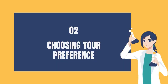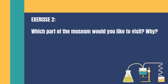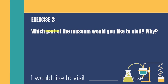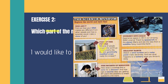Now that we are done reading, it is time to choose your preference. We already learned the word 'preference' — it comes from the word 'prefer,' meaning choosing your favourite. For Exercise 2, which part of the museum would you like to visit? The answer should be: 'I would like to visit... because...' — you need to tell me the reason why. We have five options: Who Am I, Journey into Space, Food of the Future, Healthy Earth, and The Secrets of Medicine. Let's say you're interested in the Secrets of Medicine — 'I would like to visit the Secrets of Medicine because...'